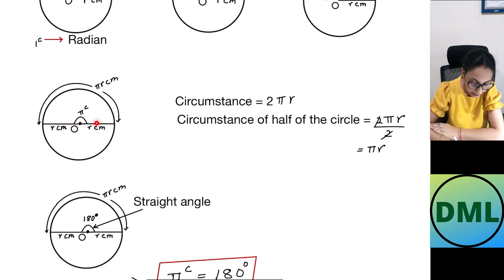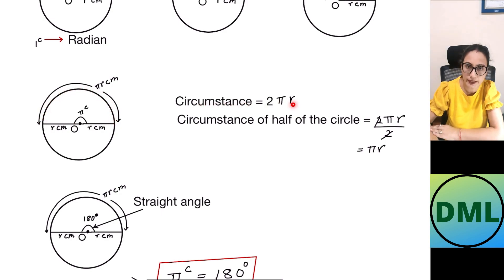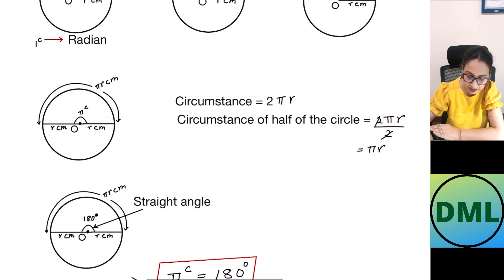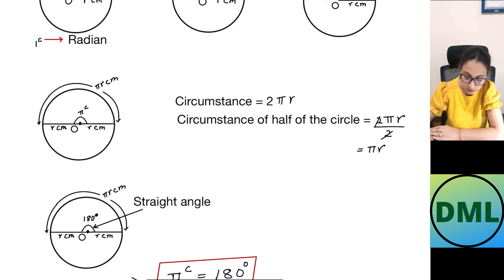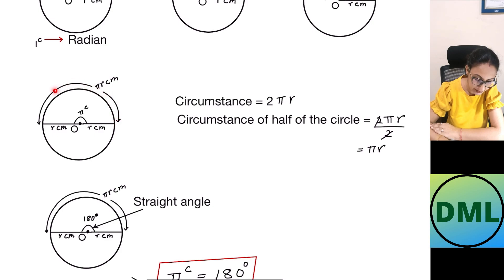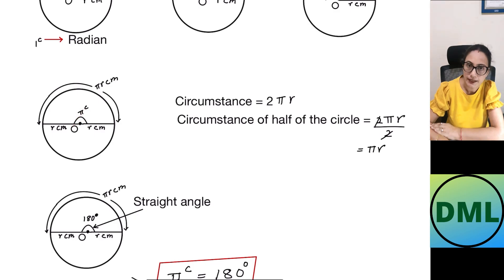If I move my arc length to the semicircle: we know that the circumference of the circle is 2πr. If I calculate half of the circle, the circumference is divided by 2, so 2 cancels with 2 and the answer is πr. That means if a semicircle is there, my arc length is πr, so the angle subtended at the center will be π radians.